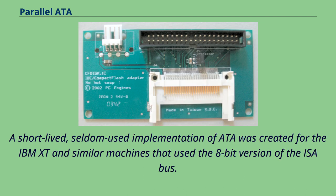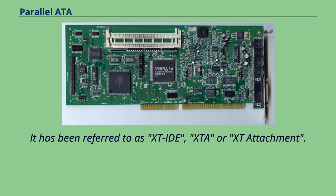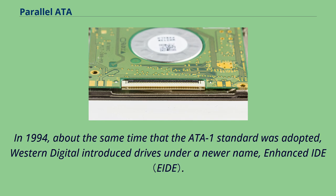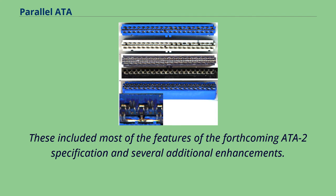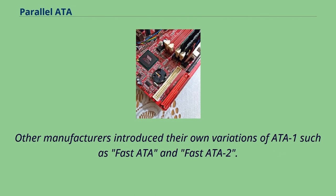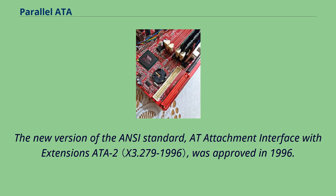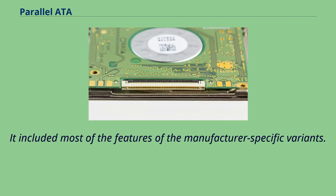A short-lived, seldom-used implementation of ATA was created for the IBM XT and similar machines that use the 8-bit version of the ISA bus. It has been referred to as XT-IDE, XTA, or XT attachment. In 1994, about the same time that the ATA-1 standard was adopted, Western Digital introduced drives under a newer name, Enhanced IDE. These included most of the features of the forthcoming ATA-2 specification and several additional enhancements. Other manufacturers introduced their own variations of ATA-1 such as Fast ATA and Fast ATA-2. The new version of the ANSI standard, AT attachment interface with extensions ATA-2, was approved in 1996. It included most of the features of the manufacturers' specific variants. ATA-2 also was the first to note that devices other than hard drives could be attached to the interface.